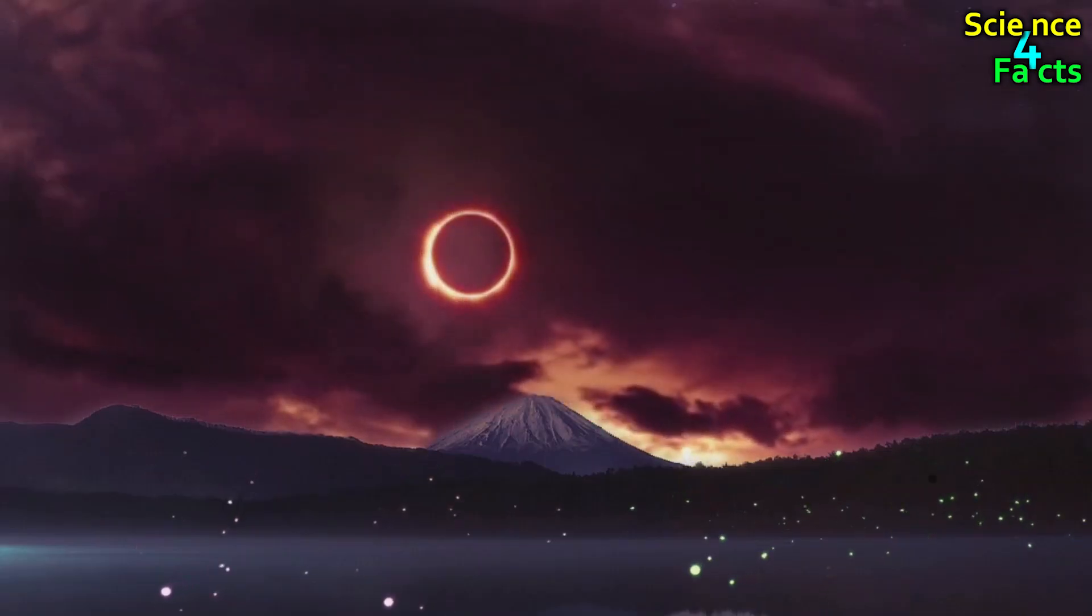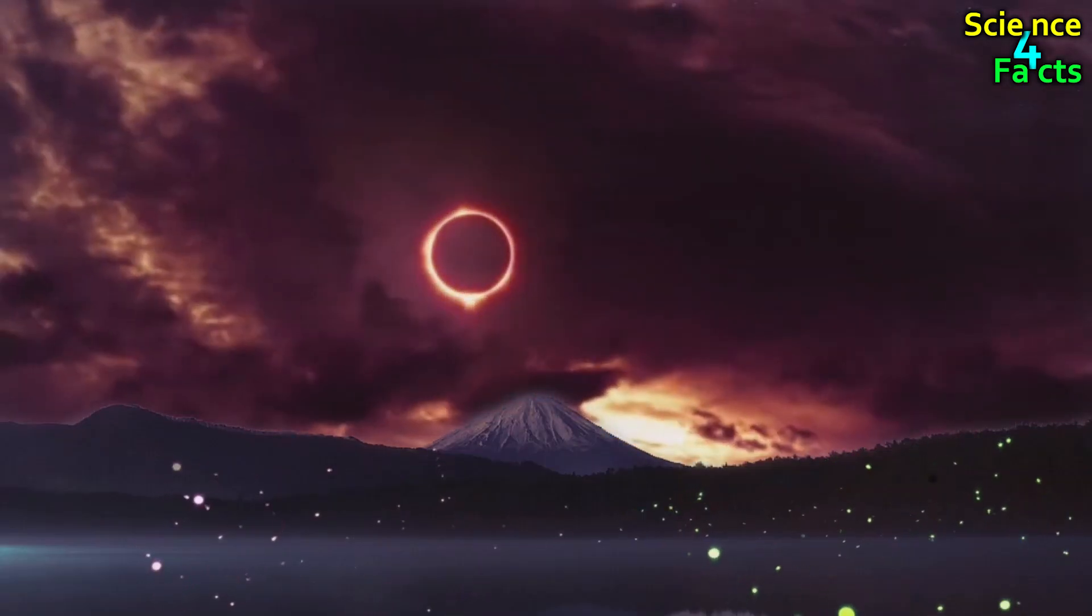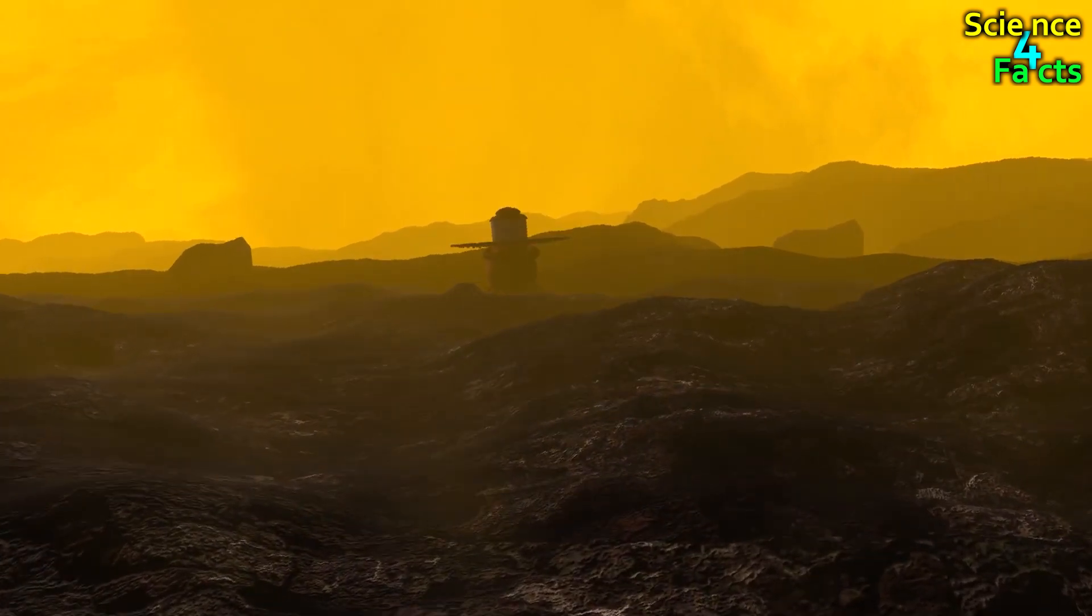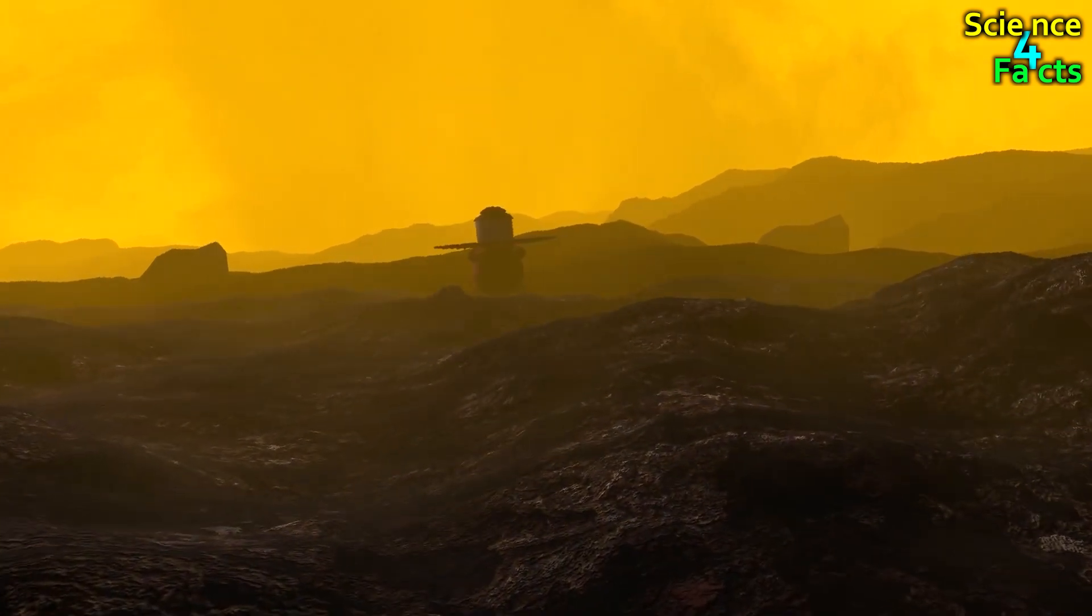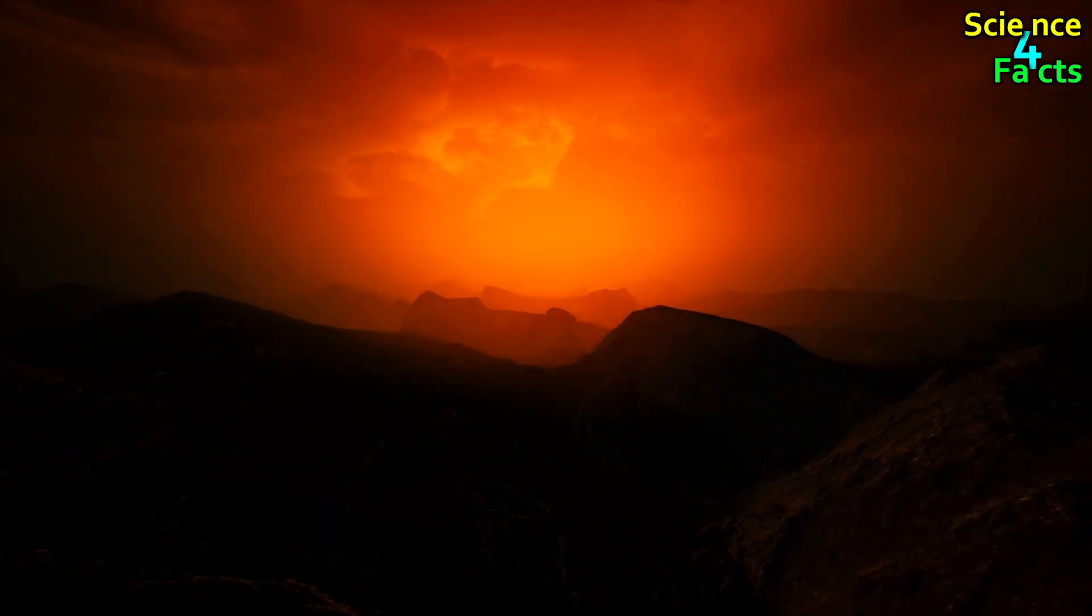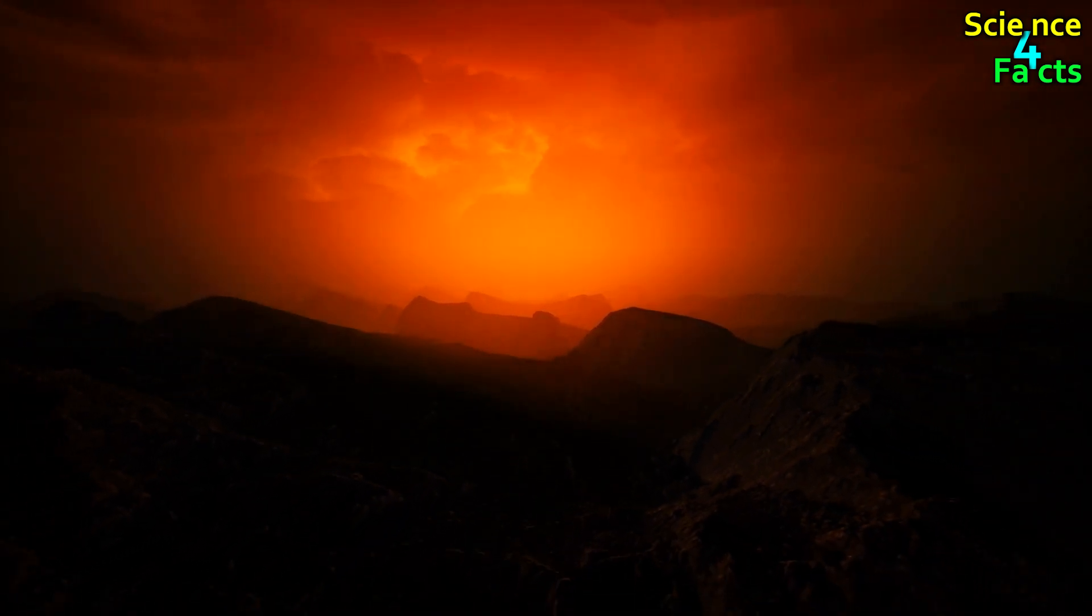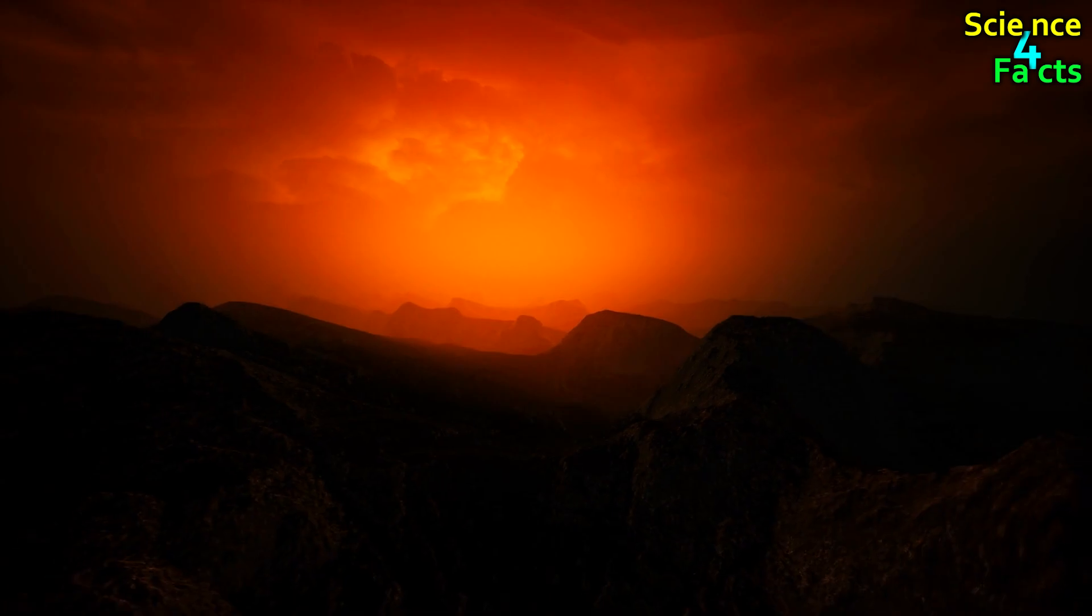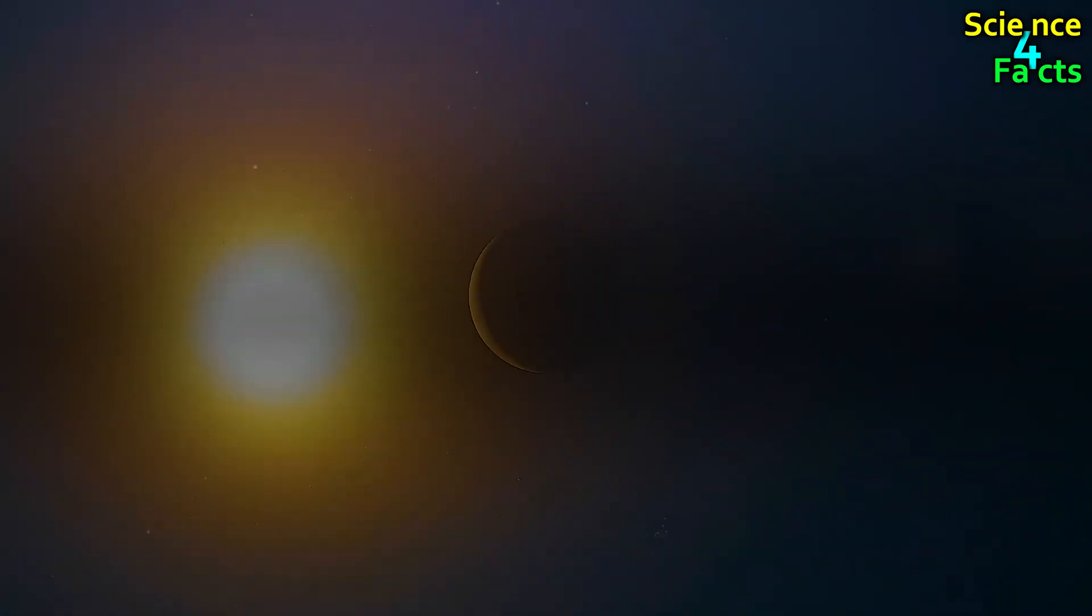This atmosphere is laden with clouds of sulfuric acid, resulting in sulfuric acid rain. Notably, sulfuric acid is a potent acid. Venus' surface temperature exceeds 450 degrees Celsius, making it hotter than Mercury, despite its proximity to the Sun.